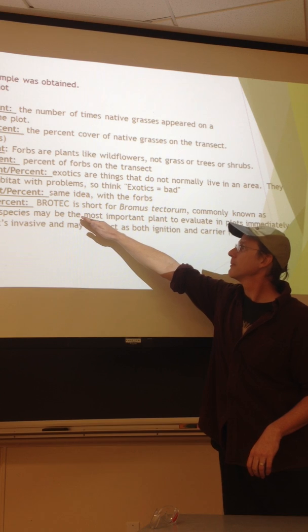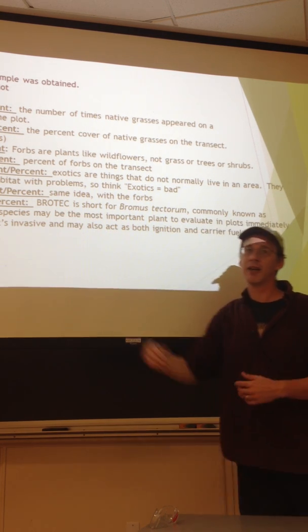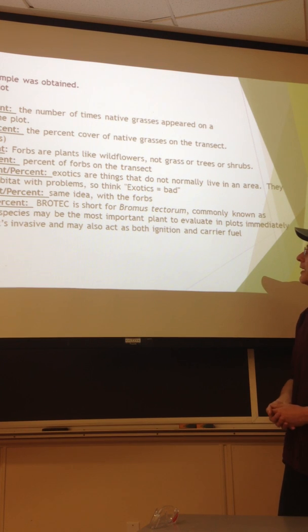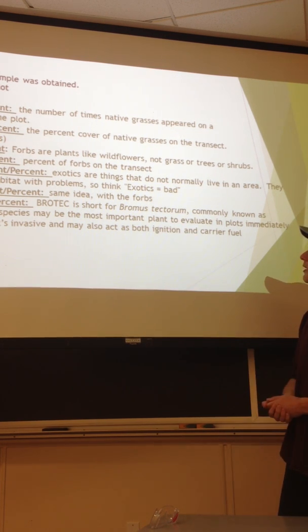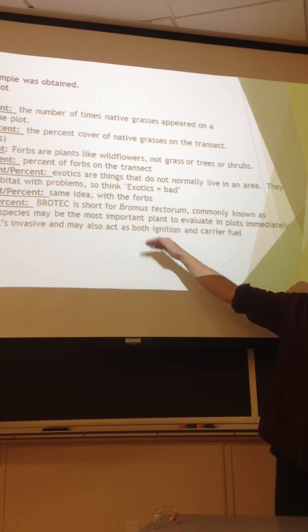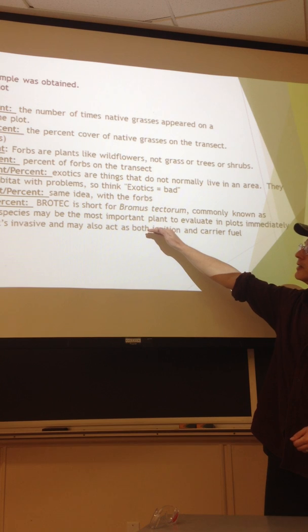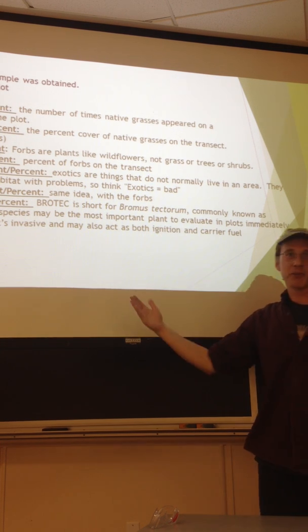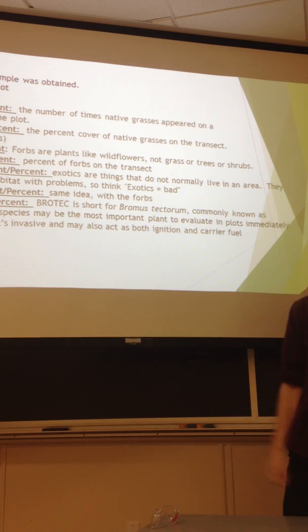I split out one species in particular, cheatgrass, which is its acronym is Brotec, Bromus tectorum. And it's perhaps the most important thing to track for wildfires. It's an invasive species so it's ecologically considered disturbance. So it's an important one to look at. And this is my own bias is I suspect it might be driving some of these other measurements.